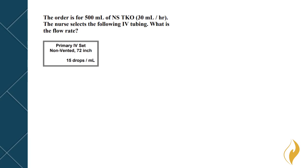In this video we are given an order and we need to find the flow rate. We are told that we need to do 30 milliliters per hour and that we are using an IV tubing that is 15 drops per milliliter. That's how much it'll allow through it. We need to know what is the flow rate.